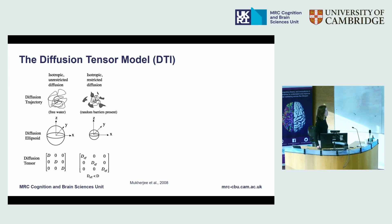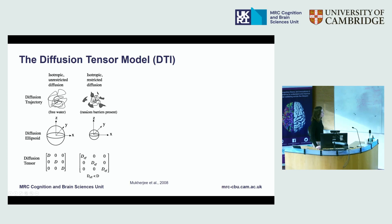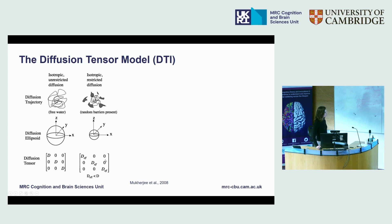In the case of still isotropic but now restricted diffusion, which is what we would get if we had some obstacles or barriers present — that could be some sort of macromolecule or cell bodies in the brain — the pattern of movement is still equal along any direction in space, but now the average displacement is smaller because it's restricted by those obstacles. We still have a diffusion ellipsoid which is a sphere, just a sphere with a smaller radius, and the resulting restricted diffusion coefficient is smaller than before.